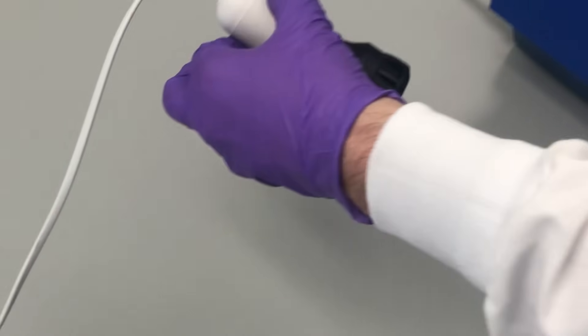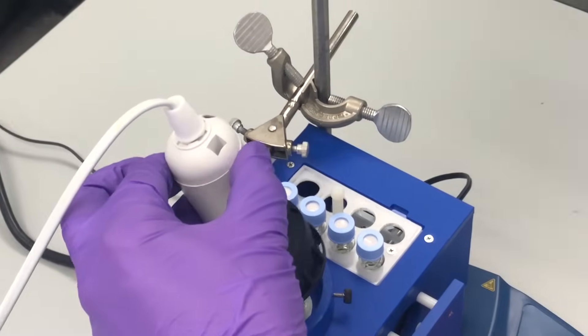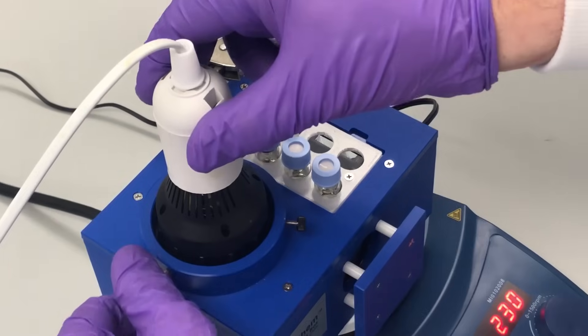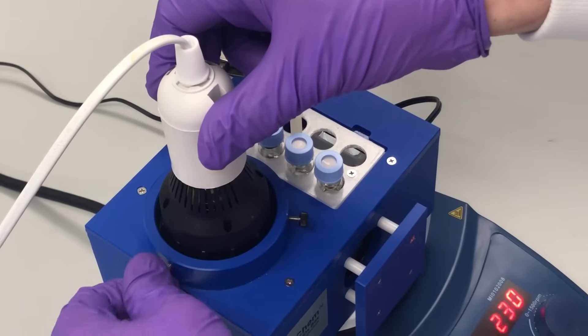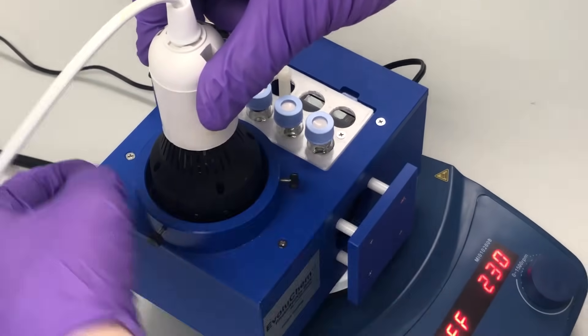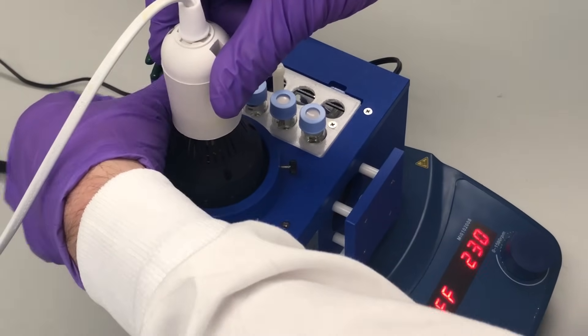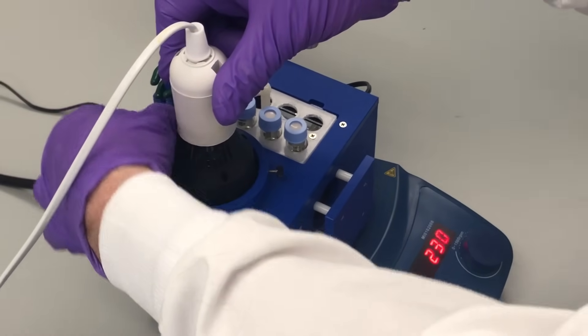Once your vials are prepared, simply place them in the appropriate EvoluChem holder and place the holder into the reaction chamber. Then simply secure the appropriate light source for your reaction to the light source mount and activate the light source.